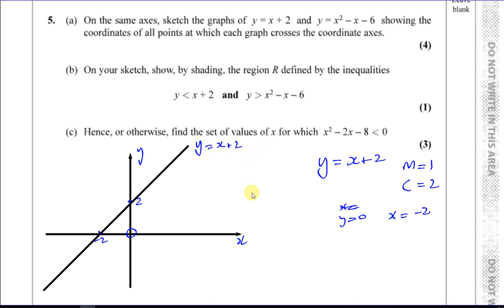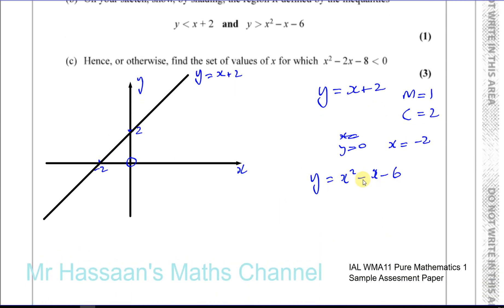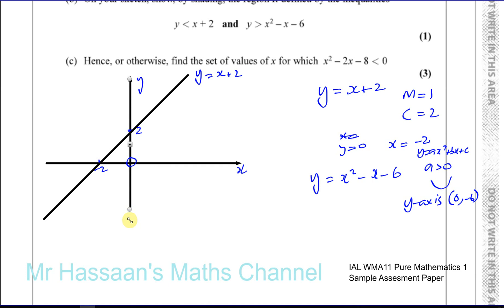Then we've got to draw the curve y equals x squared minus x minus 6. This is a quadratic because the highest power is x squared, and it has a positive coefficient for x squared — a is greater than 0 — so it's going to be a smiley face, opening upwards. It crosses the y-axis when x is 0: y equals minus 6. So it crosses the y-axis at minus 6.